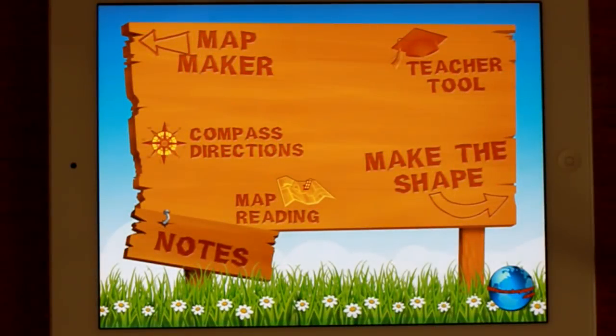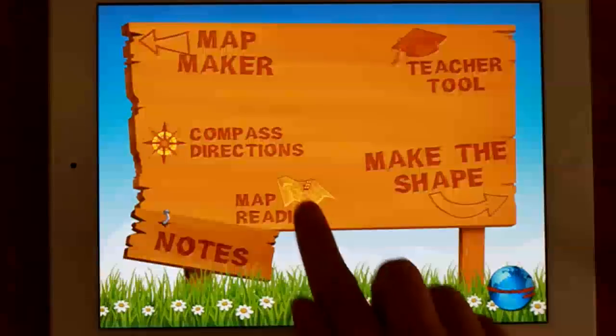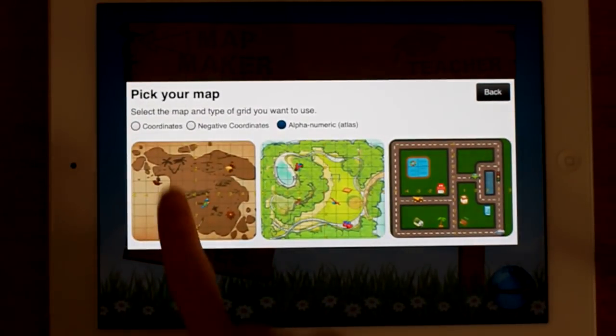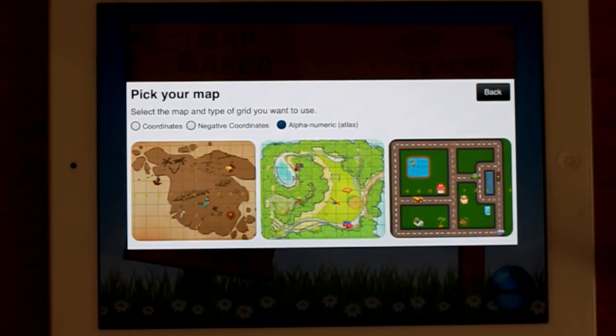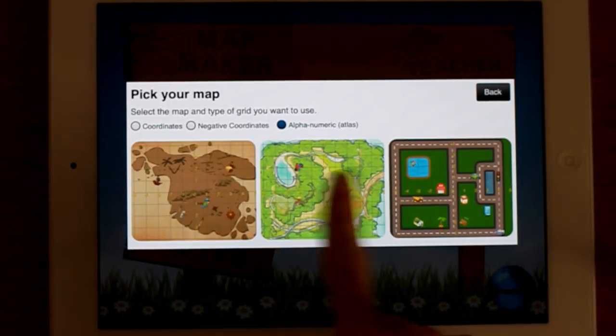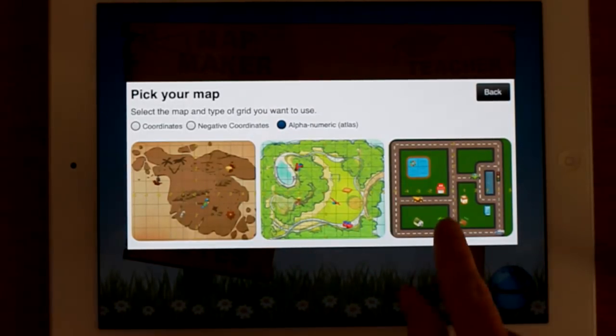Let's have a look at Little Monkey App's coordinates. Alright, so let's begin with map reading. You've got the choice between coordinates, negative coordinates and alphanumeric. And then you've got the choice between three maps. I'll pick the road map.